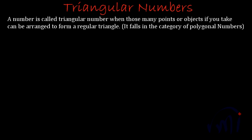In this video we are going to learn about triangular numbers and series. The definition says a number is called a triangular number when those many points or objects can be arranged to form a regular triangle. It falls in the category of polygonal numbers because a triangle is also a polygon, and the first number in any polygonal number series is always 1. So 1 is definitely a triangular number.